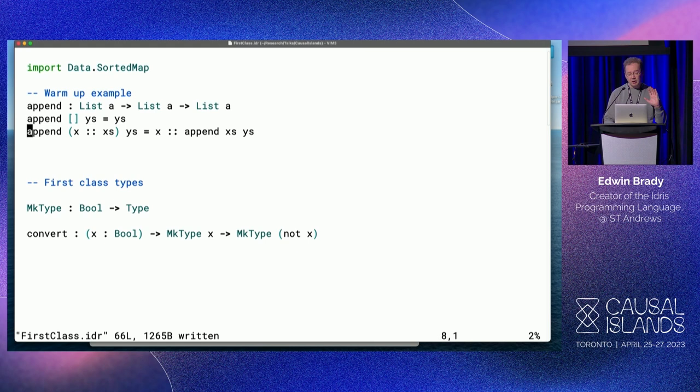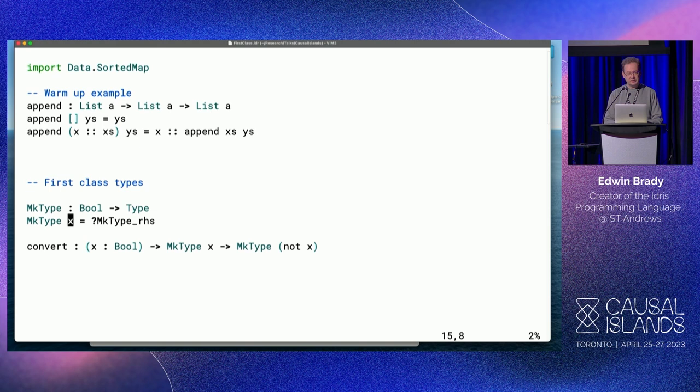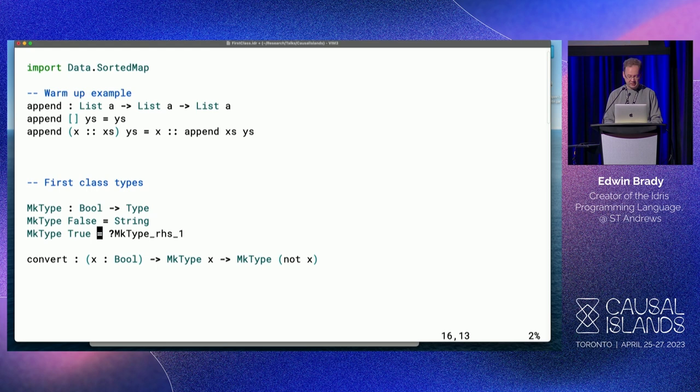Now, first-class types are where things get more interesting. If I want a type synonym or a typedef, I don't need special syntax because I can write functions that compute types. So I'm going to take a Boolean as an input and pick a type: one type if it's true, one type if it's false - integers if true, strings if false. Why would you ever write a function to compute a type? Well, where do you use types? You use them as parts of bigger types. I'm going to convert from one type to another, and the type I'm converting from is going to be given by this first argument.